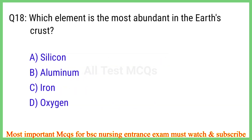Q18. Which element is the most abundant in the earth's crust? The right answer is option D: Oxygen.